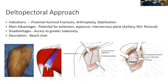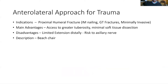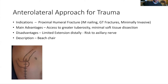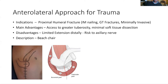The anterolateral approach for trauma — the main indications would be when nailing or fixing the greater tuberosity in proximal humerus fractures, or if performing a minimally invasive fixation. The main advantage is the access to the tuberosity and the fact that there is much less soft tissue dissection. The main disadvantage is limited extension distally because the axillary nerve is sitting there. The description: beach chair position, marking out landmarks, going down in the anterior third of the acromion down along the humeral axis. The skin incision probably shouldn't be more than about five centimeters below the acromion to try and protect the axillary nerve.